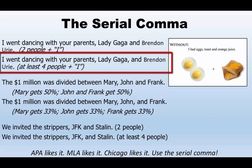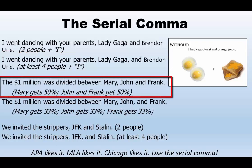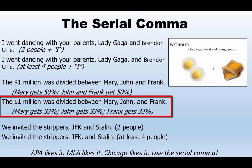But the second one: 'I went dancing with your parents, Lady Gaga, and Brendon Urie.' You see the serial comma here. In this one there are at least five people — the 'I,' your parents (at least two), Lady Gaga, and Brendon Urie. Let's talk money. 'The one million was divided between Mary, John and Frank.' Here, Mary gets 50% and John and Frank split the other 50%, or 25% each. Great deal for Mary. But 'The one million was divided between Mary, John, and Frank' — with the serial comma — means each gets one-third.